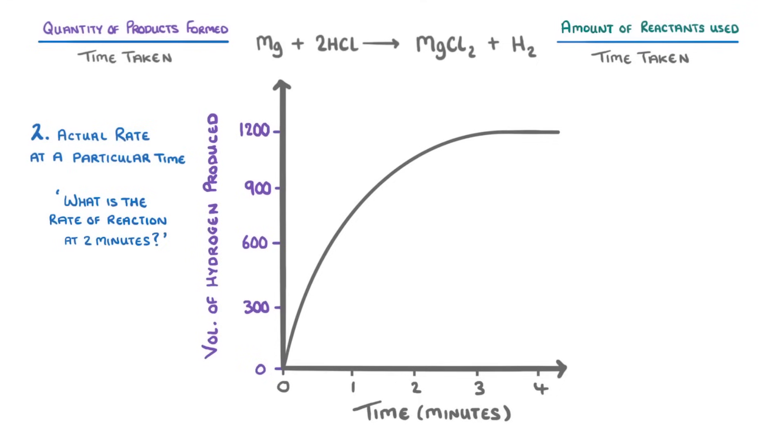So the first step is still to find 2 minutes on the x-axis and trace up to find where it intersects our curve, but then instead of drawing a line across to the y-axis like we did before, we instead draw a tangent to the curve at that point. And remember a tangent is just a straight line that just touches the curve and has the same gradient as the curve does at that point.